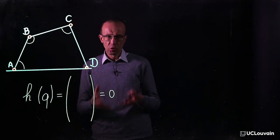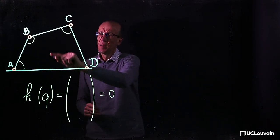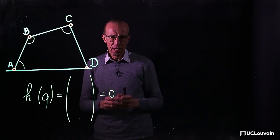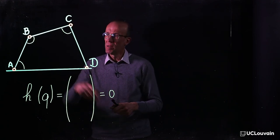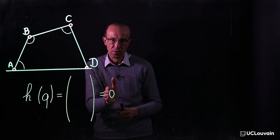Whatever the origin of the constraints—parallelism between bodies, kinematic loops—they impose algebraic relationships between the generalized coordinates q, denoted h equals zero.